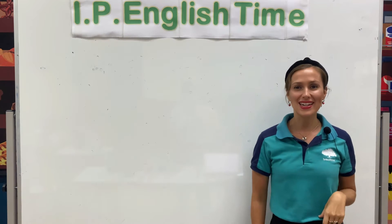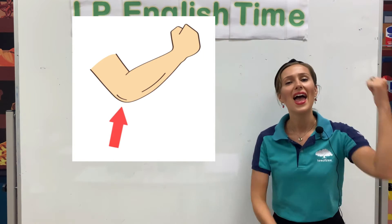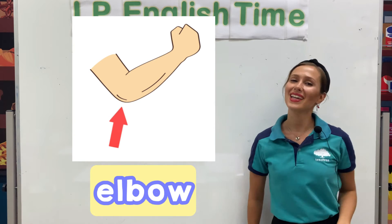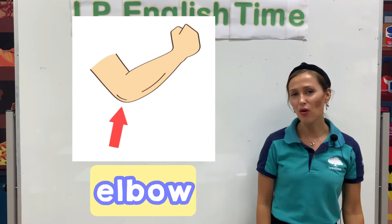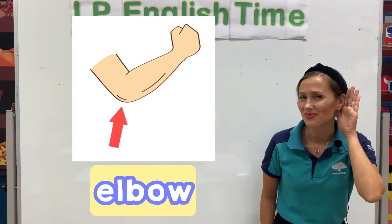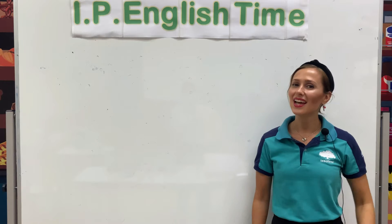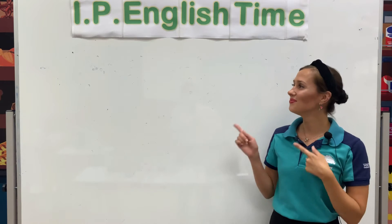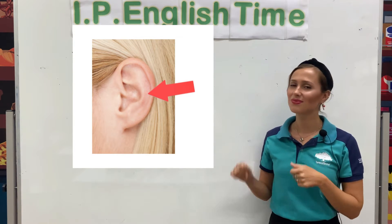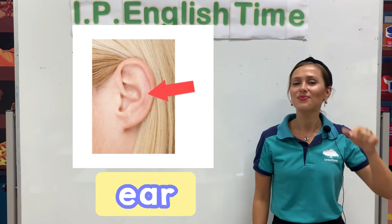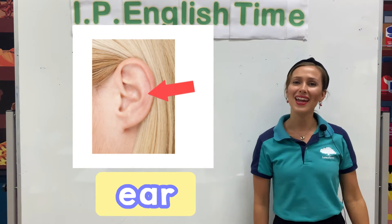And letter E is for... Elbow. Can you repeat after me? E, E, Elbow. Well done! Letter E is for... Eer. Can you repeat? E, E, Eer.